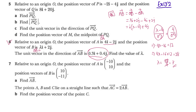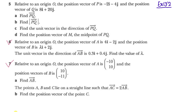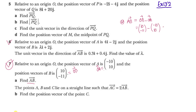Now let's move to question number 7, the last question. The position vectors are given in column vector form: vector a is given and vector b (OB) is the column vector (10, minus 11). The first part is to find AB. We know AB equals OB minus OA. OB is (10, minus 11) and minus OA gives plus (10, minus 10). The top is 10 plus 10 equals 20, and the bottom is minus 11 minus 10 equals minus 21. So vector AB is the column vector (20, minus 21).